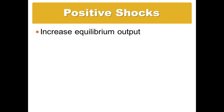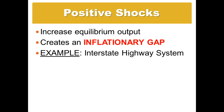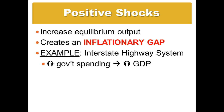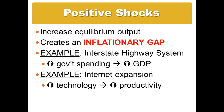In the case of a demand-side aggregate demand positive shock, we have what's called an inflationary gap — more output than in long run equilibrium and higher price levels. An example could be the government choosing to invest in an interstate highway system, increasing government spending, which is an increase in G, causing a shift in aggregate demand and an increase in overall GDP. An example of a supply side shock might be the expansion of the internet, where increased technology led to more productivity, lower business costs, a higher profit per unit, and a right shift in aggregate supply.